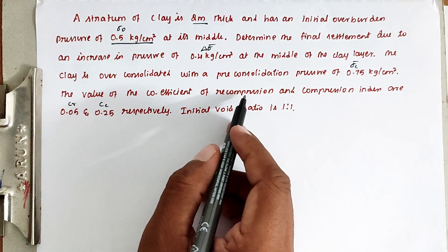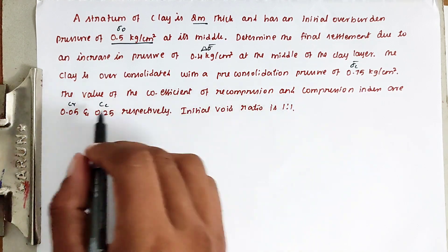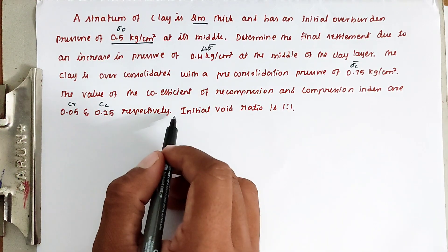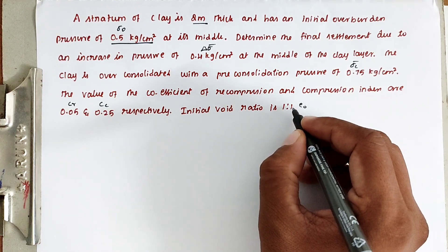So Cr is the coefficient of recompression and Cc is the coefficient of compression. That is 0.05 and 0.25 respectively. Then initial void ratio e naught is 1.1.